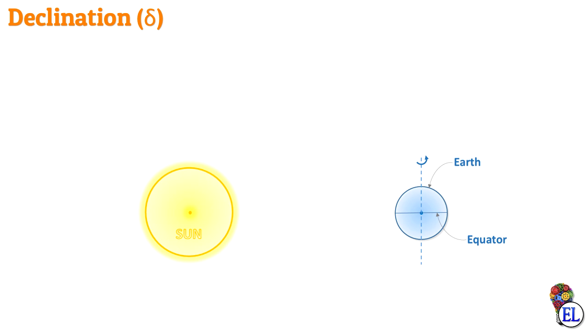So, let us draw the actual axis of rotation. The equator is a perpendicular plane to the axis of rotation of the earth. Let us now connect the centers of the sun and the earth by extending a line from the center of the sun to the center of the earth.